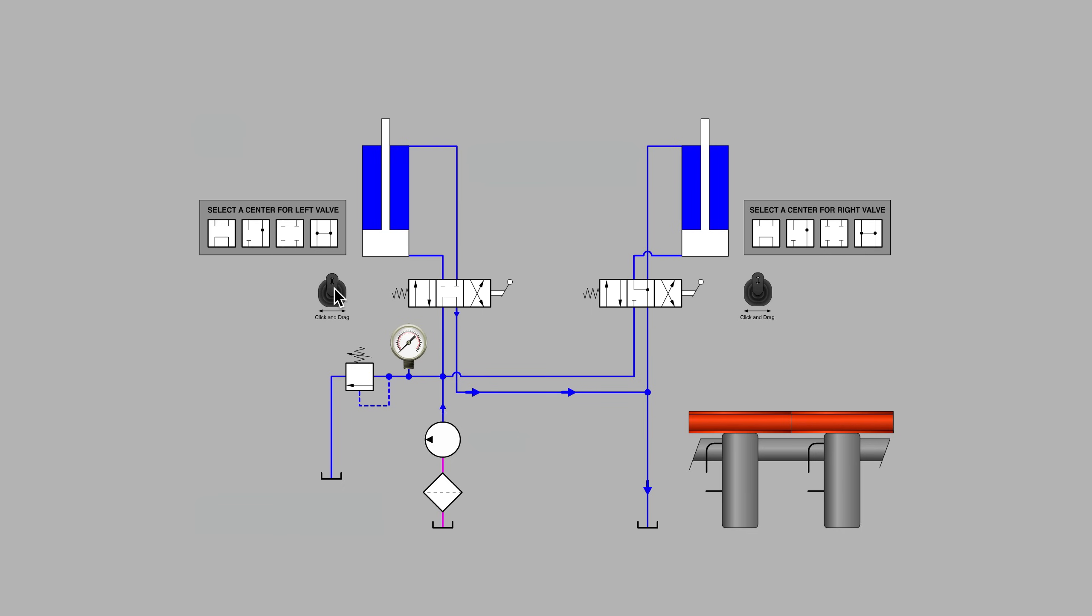When I move the valve on the left into the extend position, will the left cylinder rise? Aha. Yes, it does. The left cylinder rises because when we go into the extend position, we find out that the pumps flow is blocked over here at the right hand valve. And so the only path for the pumps flow at that moment is into the cylinder to extend it. So that seems to be working nicely.